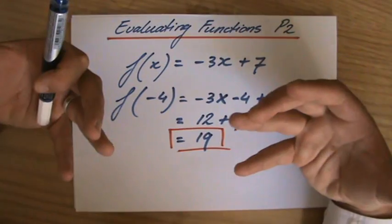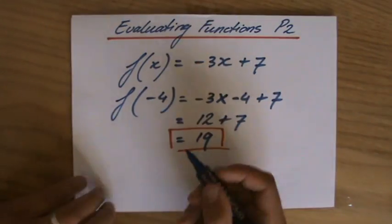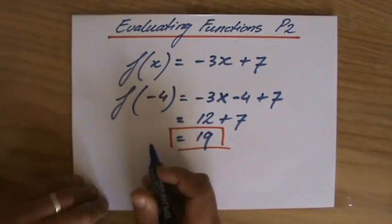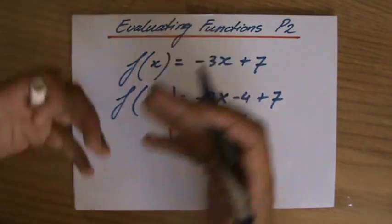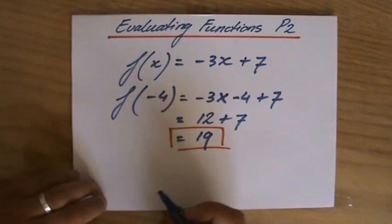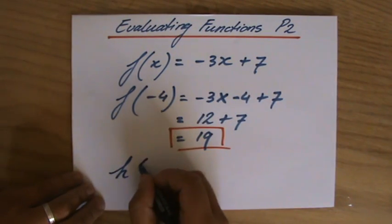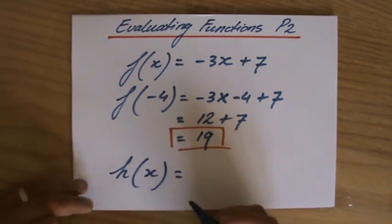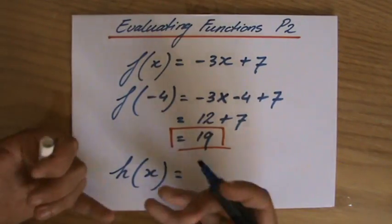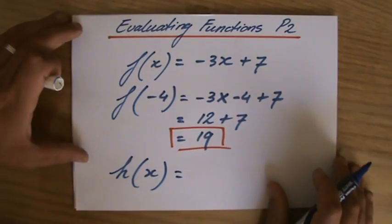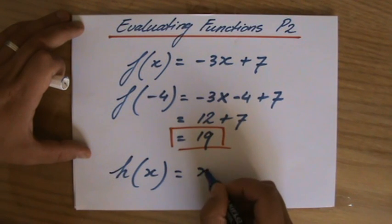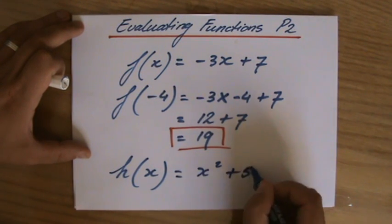Now if in the same question you get a different function, they usually will give it a different letter than f, just to distinguish between the two different functions. So let's say in the same question you get, and now evaluate the function h(x), for instance. Usually they will use an h or a g or an i somewhere in that part of the alphabet.